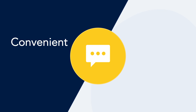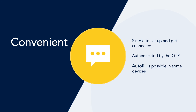SMS authentication also offers significant convenience to users. It is easy for users to set up and get connected. SMS authentication sends unique codes directly to the users, which they can then easily input on the captive portal to verify their identities. With some devices, like iOS, the verification code can be auto-filled and visitors can complete the onboarding process without leaving the captive portal.